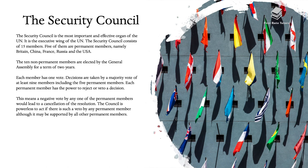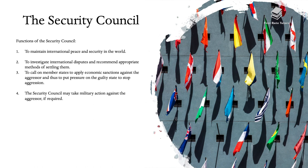Each member has one vote. Decisions are taken by a majority vote of at least nine members, including the five permanent members. Each permanent member has the power to reject or veto a decision, meaning a negative vote by any one of the permanent members would lead to the cancellation of the resolution. The Council is powerless to act if there is such a veto by any permanent member, even if supported by all other members. The functions of the Security Council are: to maintain international peace and security; to investigate international disputes and recommend methods of settling them; to call on member states to apply economic sanctions against aggressors; and to take military action against an aggressor if required.